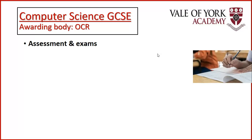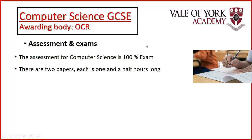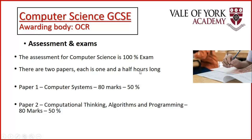In terms of how you're assessed, you're assessed by two exams — that's the only assessment, there's no practical assessment. Each exam paper is an hour and a half long. Paper one covers computer systems: the structure of a CPU, how networks work and things like that — that's 80 marks. The other half is about computational thinking, algorithms and programming, and that's also 80 marks.